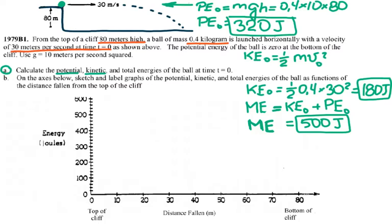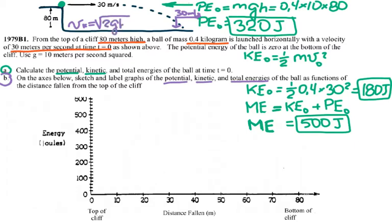Those were the answers for part A. For part B, we need to sketch and label graphs of potential, kinetic, and total energies as a function of distance. First, let's find the final velocity. The horizontal component doesn't change — it stays at 30 meters per second throughout.